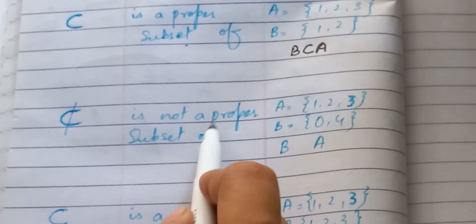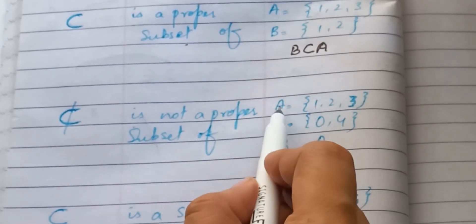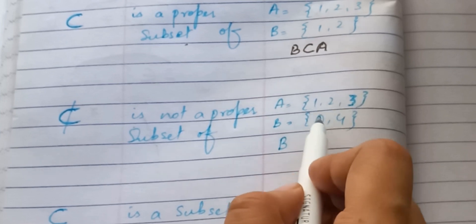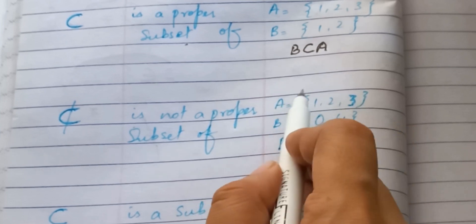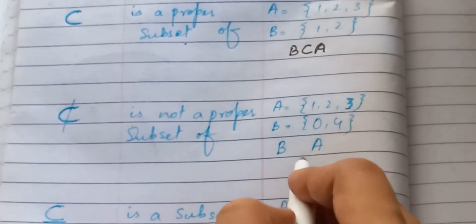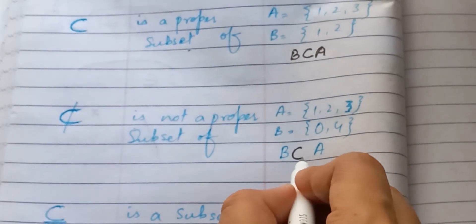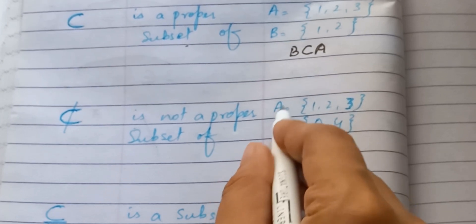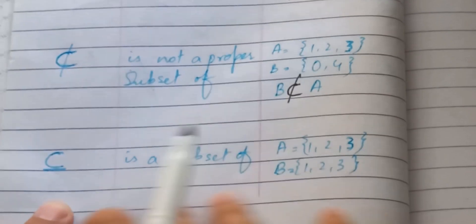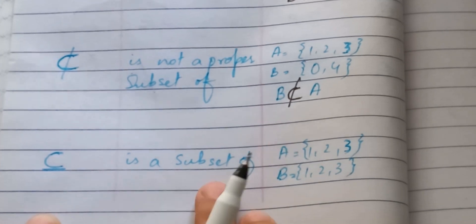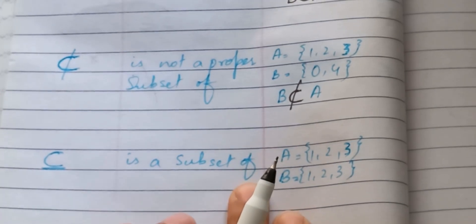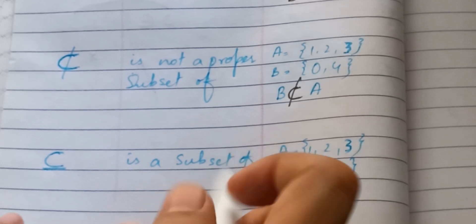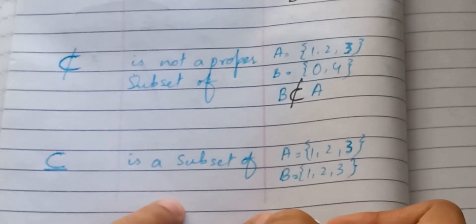The next symbol is 'is not a proper subset of' (⊄). Here, A = {1, 2, 3} and B = {0, 4}. There are no matching numbers between the two sets, so we say A is not a proper subset of B.